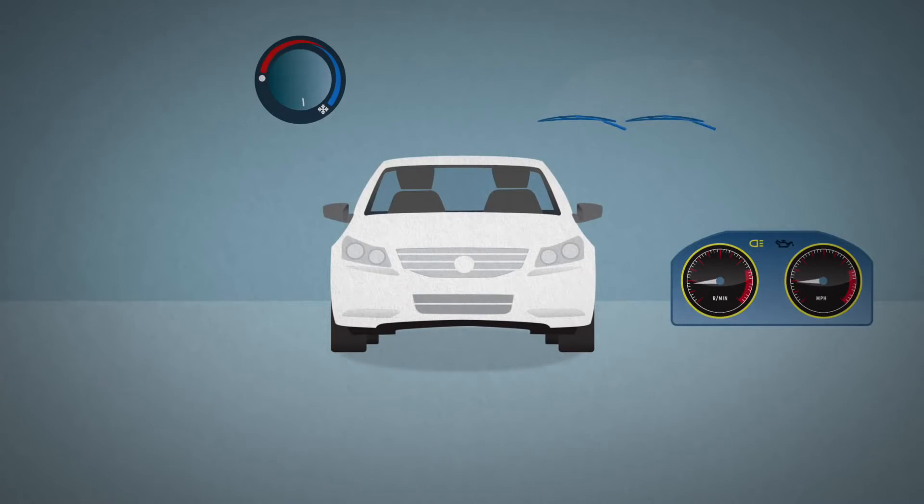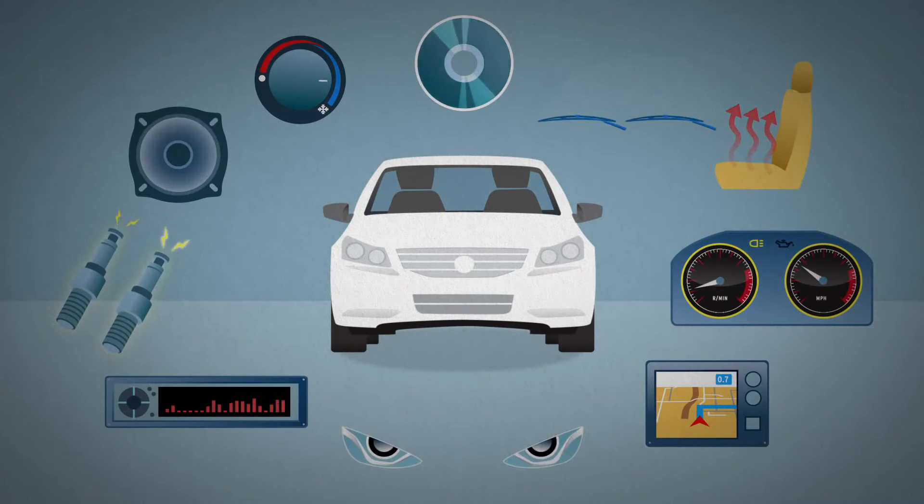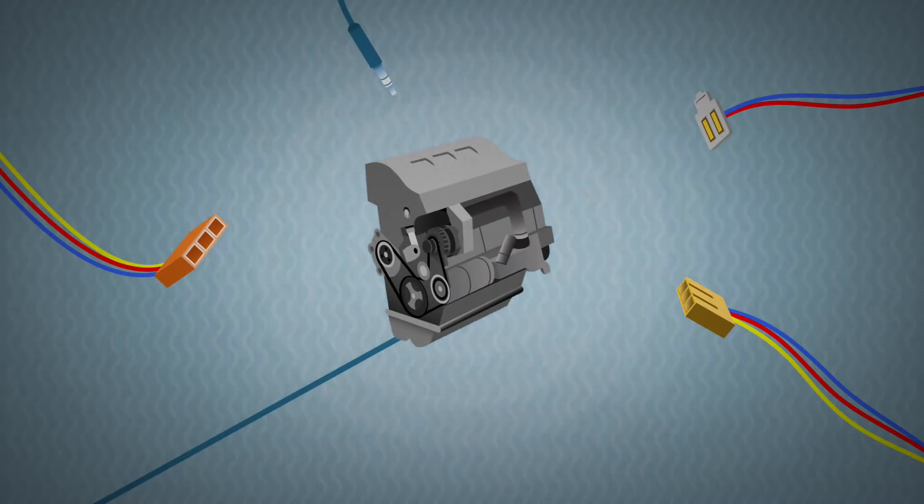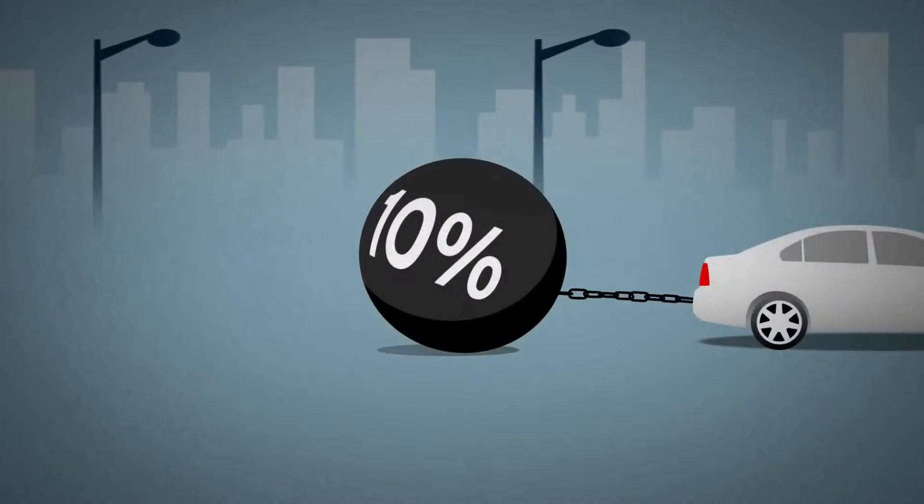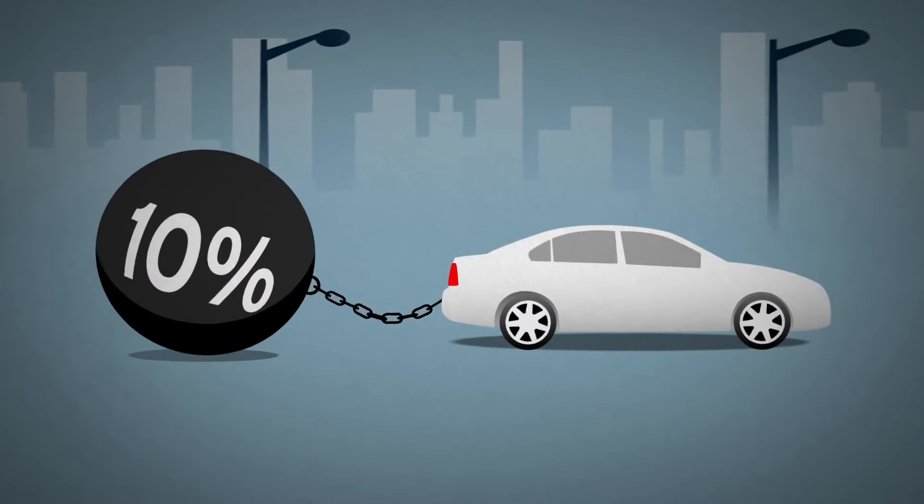Meanwhile, cars also use a lot of electricity to power everything from essentials to all the electronic gizmos that drivers demand today. They get this electricity from the alternator, which in most cars is constantly driven by the engine, sapping up to 10% of your fuel and engine power in everyday driving.